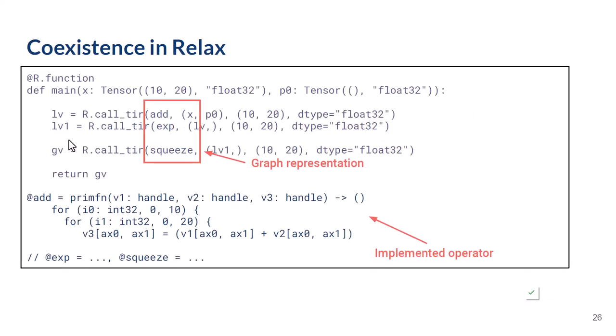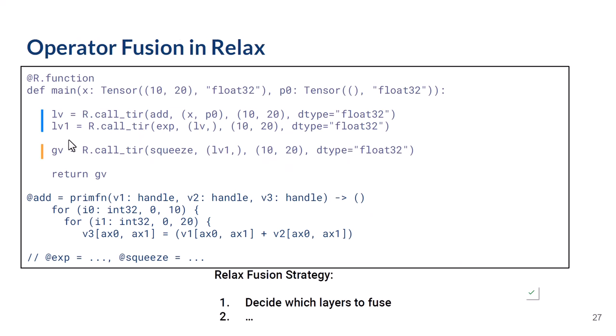One of the core things that Relax brings is the notion of coexistence. Whereas previously the graph-level and operator-level representations of models in TVM lived in separate translation modules, Relax allows them to live together. You can see a Relax main function that expresses the overall graph and how the model is connected, but then the implemented operator lives right alongside the top-level graph representation.